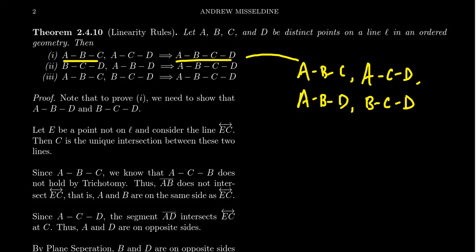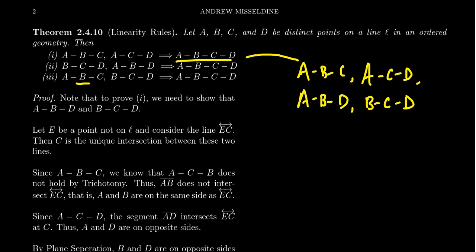There are two other ones we want to state. If we know that C is between B and D, and we know that B is between A and D, then B and C are both between A and D, and in particular we have A-B-C-D. It's the same conclusion but with a different set of hypotheses. Likewise, if B is between A and C, and C is between B and D, then A-B-C-D holds as well — same conclusion, different hypotheses.